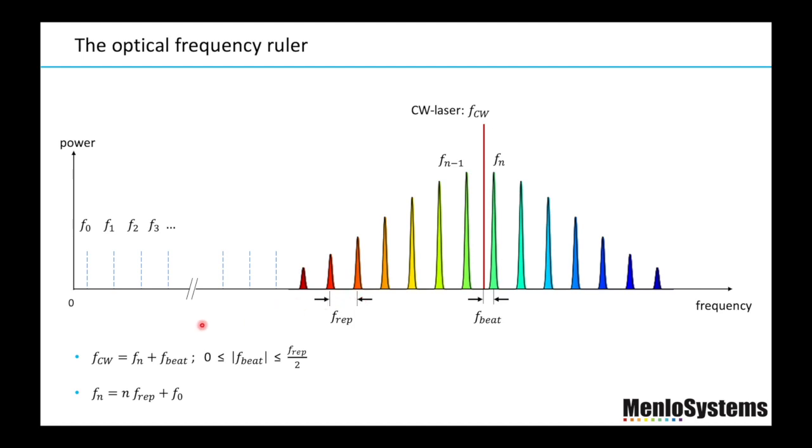Here you see all the different modes and the spacing would be the repetition rate. The frequency of the CW laser will be given by the frequency of the mode N that we already know because we have measured with a wavemeter, and also the frequency of the beat.